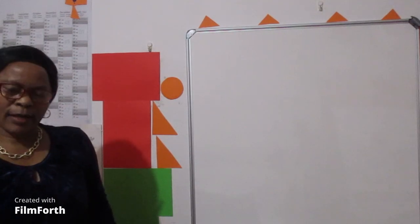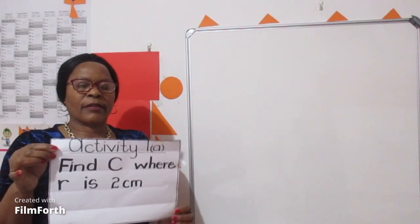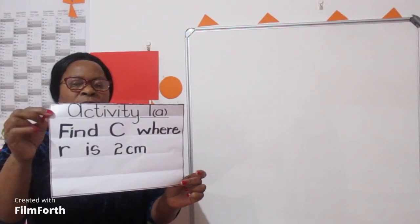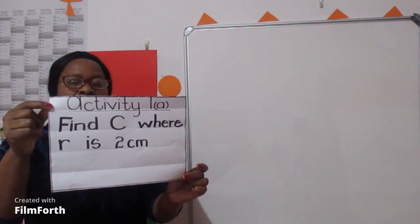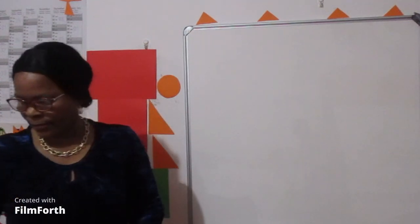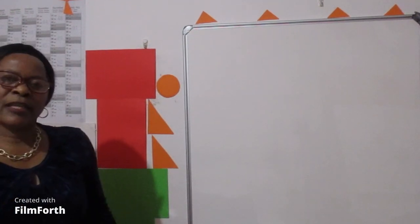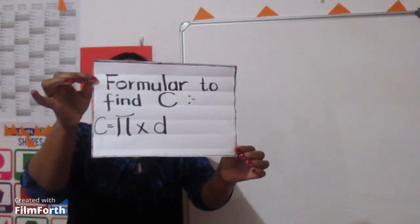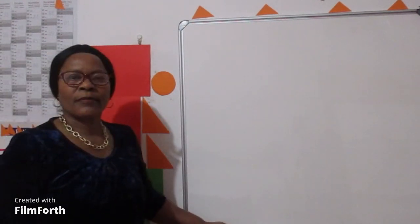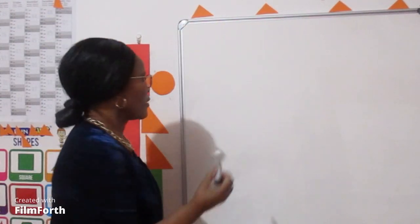Let's work Activity 1A: find C where r is 2 centimeters. What is the formula to find C? The formula to find C is pi times d. Let's calculate using the formula.